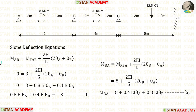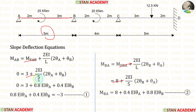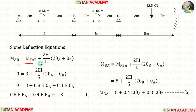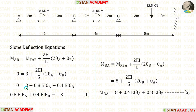Now let us write the slope deflection equations for span AB. We apply the fixed end moments and the length of AB, which is 5 m. Using the first equilibrium equation (MAB = 0), we substitute zero for MAB and rearrange the terms to the left side with a sign change. This gives us our first equilibrium equation.